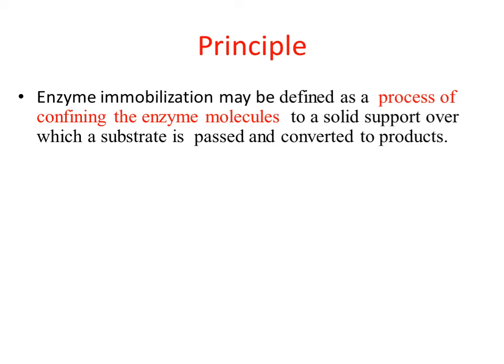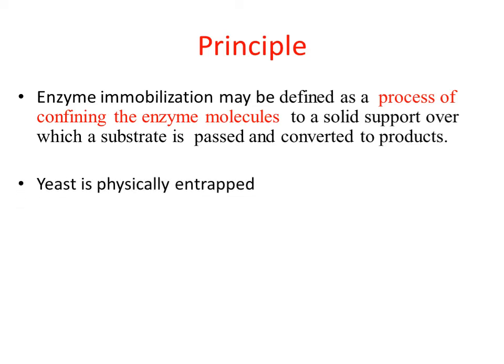Stability increases in many cases because of the binding of enzyme to the matrix. Enzyme properties such as activity, stability, etc. can be modified. The efficiency of the catalytic reaction is better in many cases. Better control of reaction can be achieved, and the catalytic process can be operated continuously. These are the advantages of immobilization.